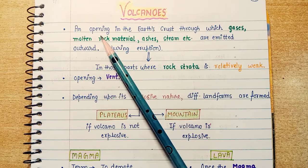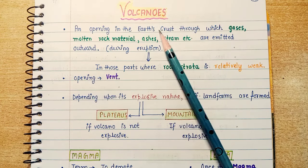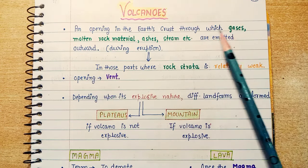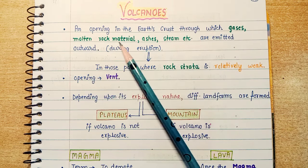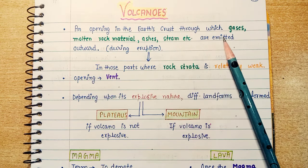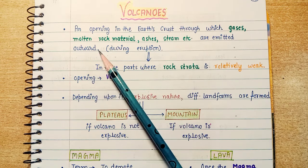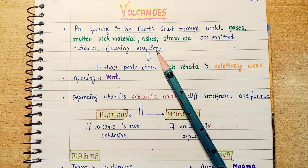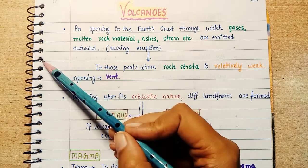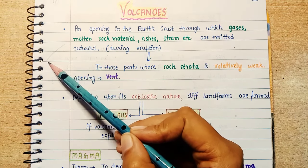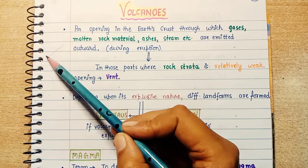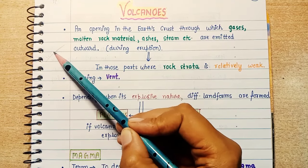What are volcanoes? An opening in the earth's crust through which gases, molten rock material, ashes, steam, etc. are emitted outward during eruption. The earth's crust — what is our crust? This is our surface, and this is our crust.